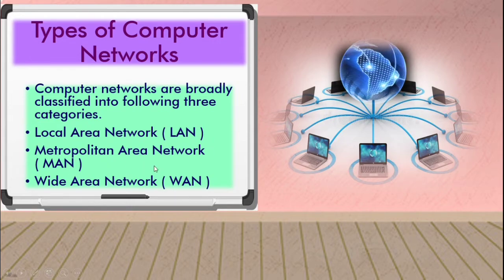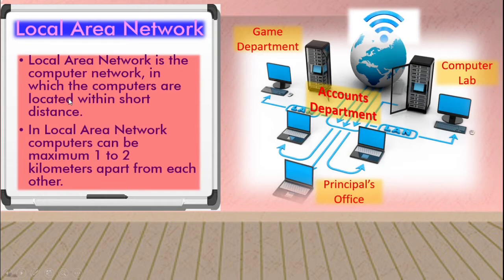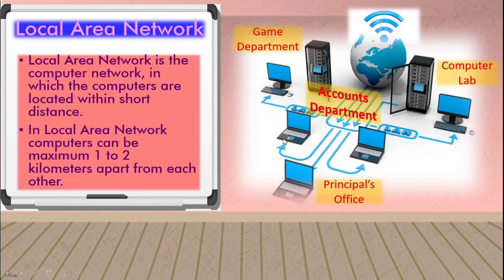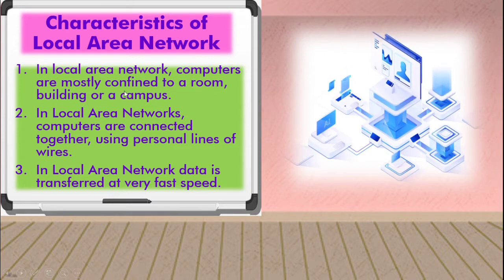Now we will learn about Local Area Network. In this network, computers are located within a short distance — the maximum distance between each computer is one or two kilometers. See the picture: principal office, accounts department, games department, computer lab — all are in one building, meaning they are all at a short distance. That's why a local area network is used here. LAN is mostly used in houses, buildings, or campuses using a personal line of wire.